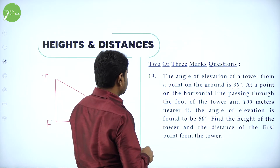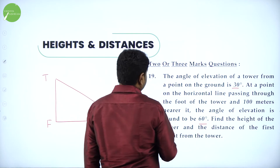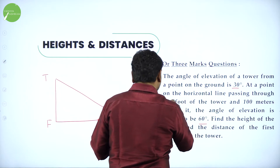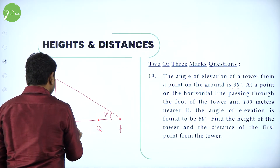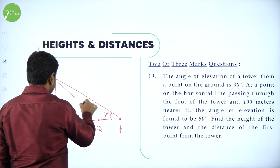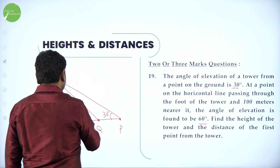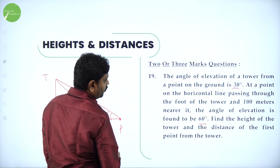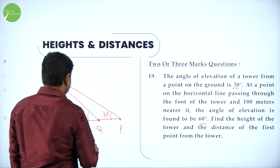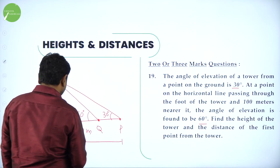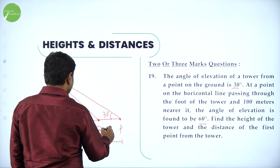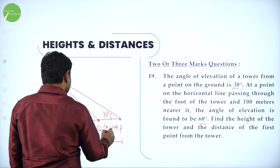Draw a diagram. TF is the tower. The first point P observes the tower at 30 degrees. Point Q is 100 meters nearer to the foot, and from Q the angle of elevation is 60 degrees. Let the distance FP equals x be what we need to find. Then FQ equals x minus 100.